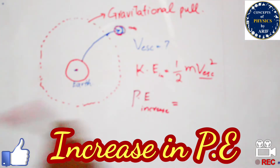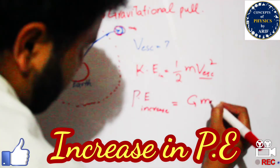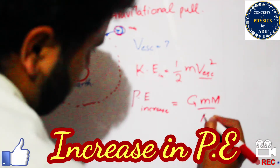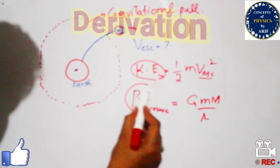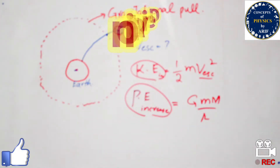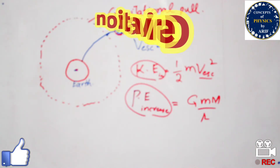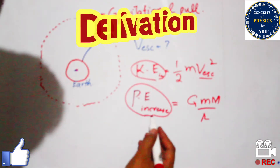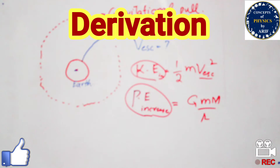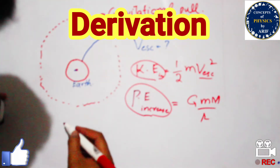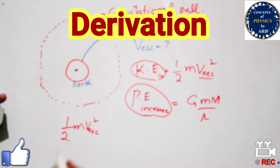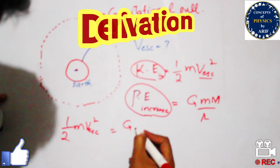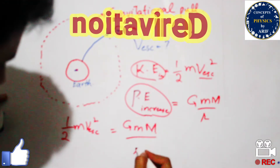The increase in potential energy will be GMm/r. When the initial kinetic energy and the increase in potential energy are balanced with each other, the body can escape to the infinite point. So we set: half mv² = GMm/r.